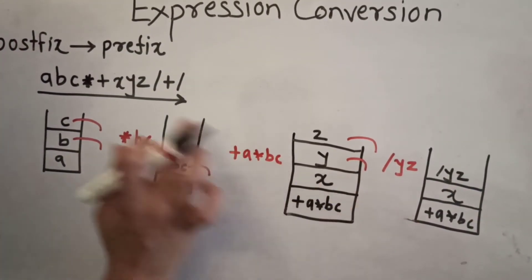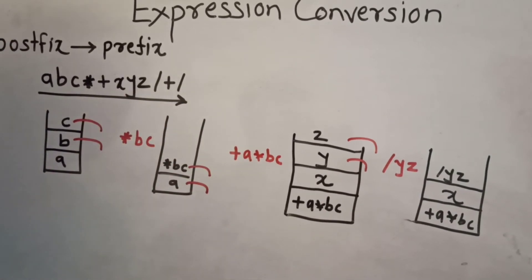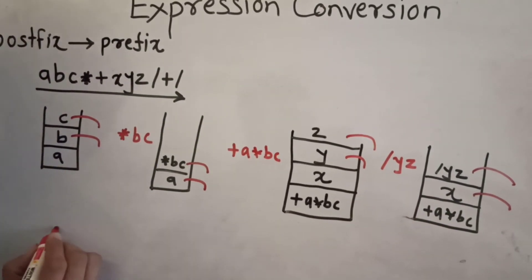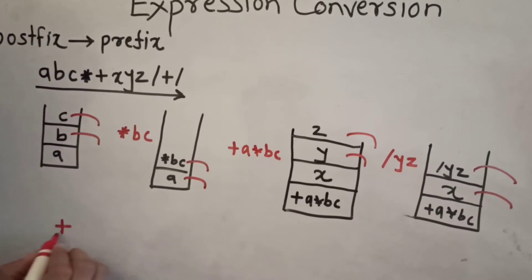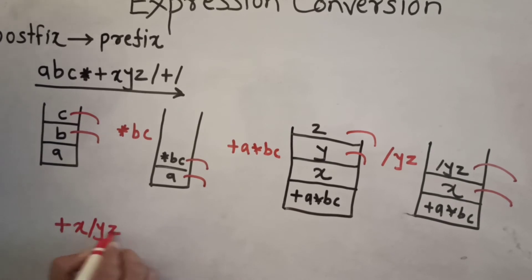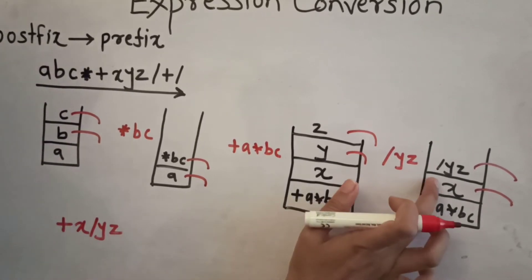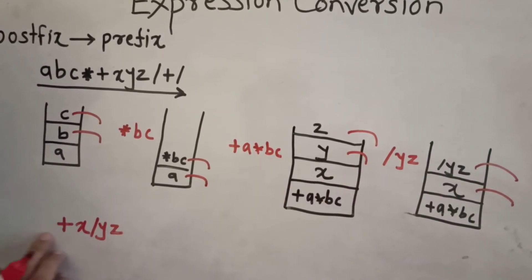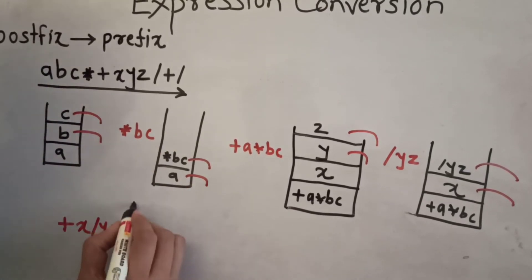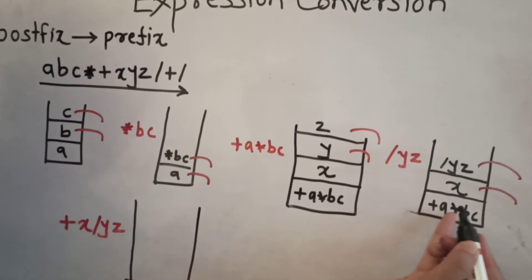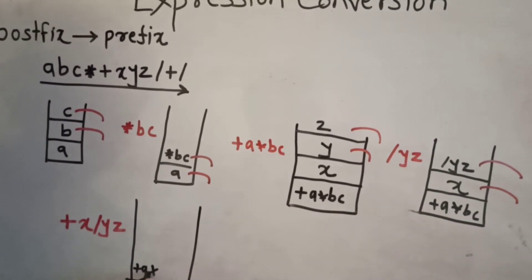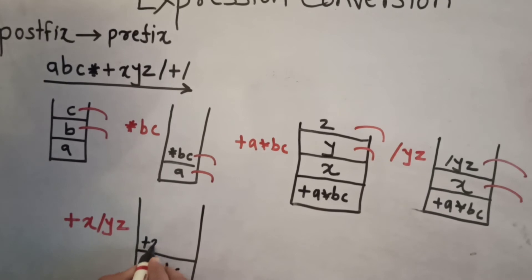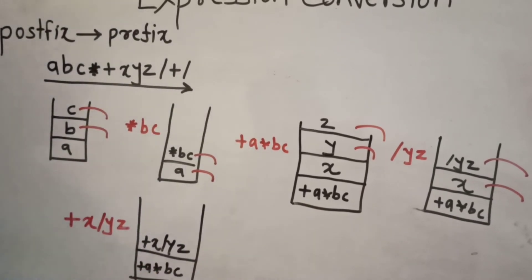The stack now contains +A*BC at the bottom, then X, then /YZ. The next character is the plus operator. We delete the topmost two operands — /YZ and X — and form the combination: +X/YZ. That means plus is the scanned operator, X is one deleted operand, and /YZ is the other. This prefix expression +X/YZ is pushed back onto the stack, which now contains +A*BC at the bottom and +X/YZ on top.